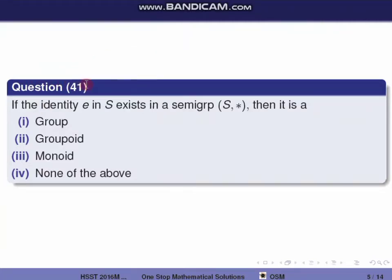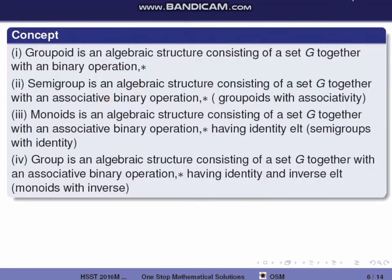Next question, question 41: If the identity e in S exists in a semigroup (S, *), then it is what? A semigroup is an algebraic structure where the operation * is a binary operation and the associative property holds.